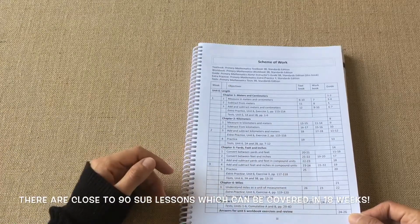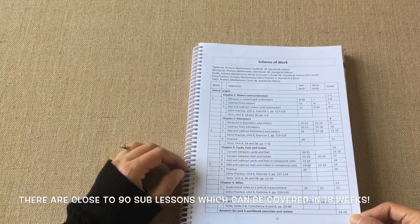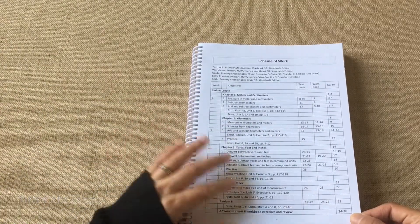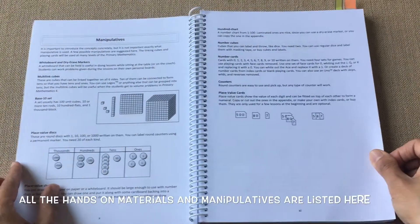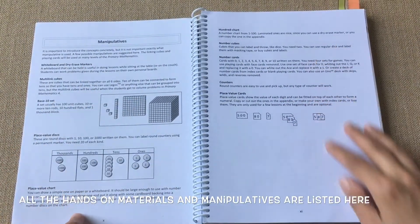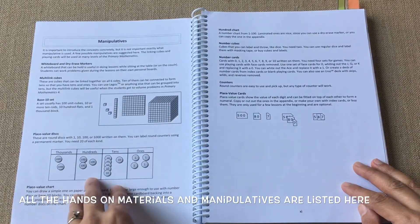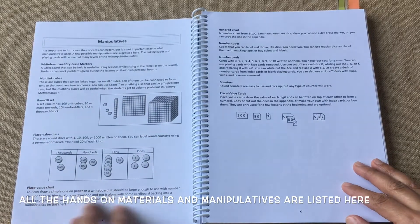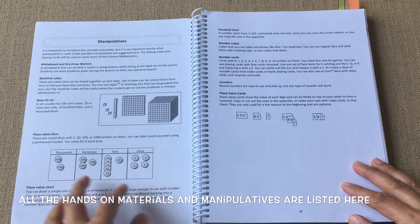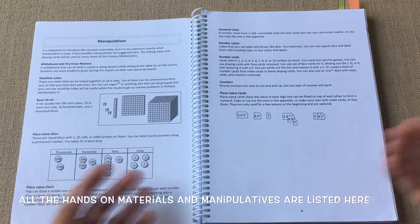What I typically do is before a semester begins, I'll go through all the lessons we have to cover for that semester and count how many sub-chapters we have. Then I divide that based on the number of days we'll be schooling. It tells you what manipulatives you need for that semester.